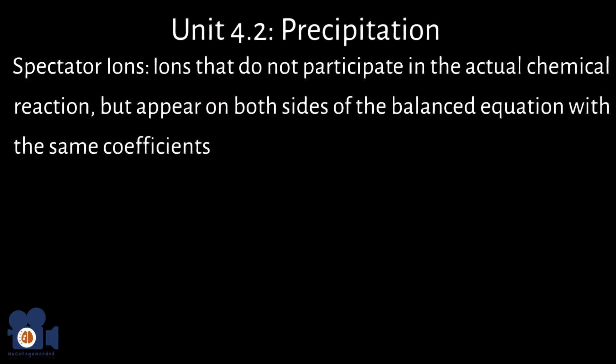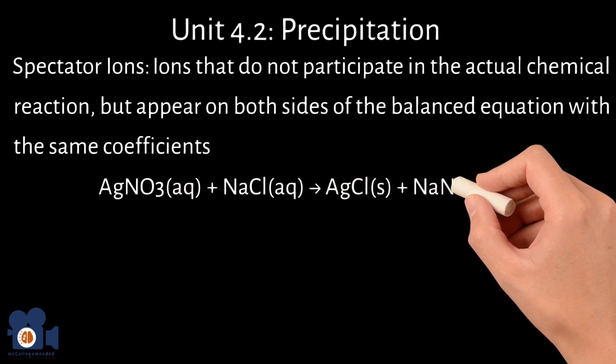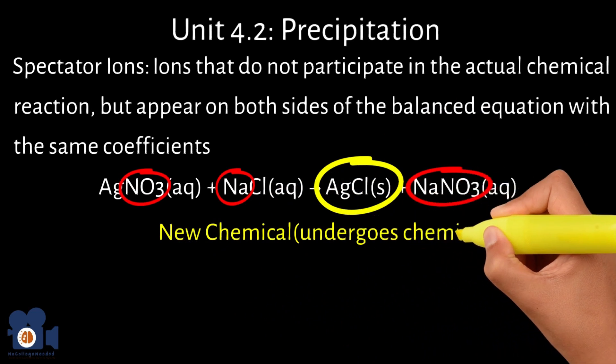For example, in the double displacement reaction, AgNO3 plus NaCl going to AgCl plus NaNO3, the sodium and NO3 ions are spectator ions. They are present in both the reactants and products but do not undergo any chemical change.